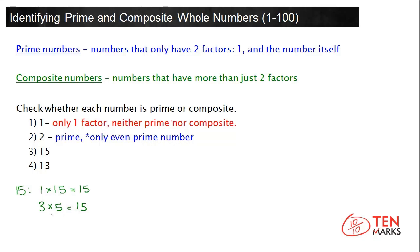5 is also a factor of 15, because 5 times 3 equals 15. So 15's factors are 1, 3, 5, and 15. 15 has more than 2 factors, so it is a composite number.